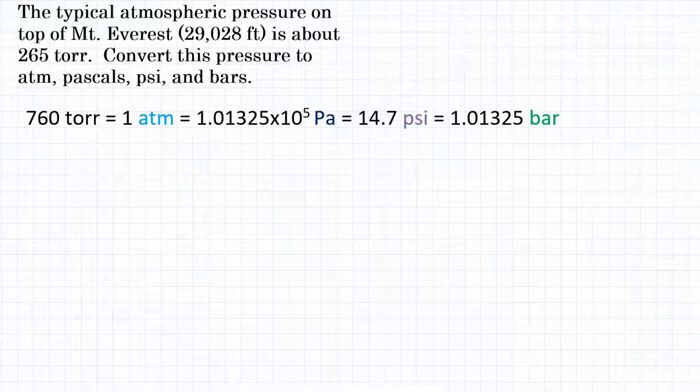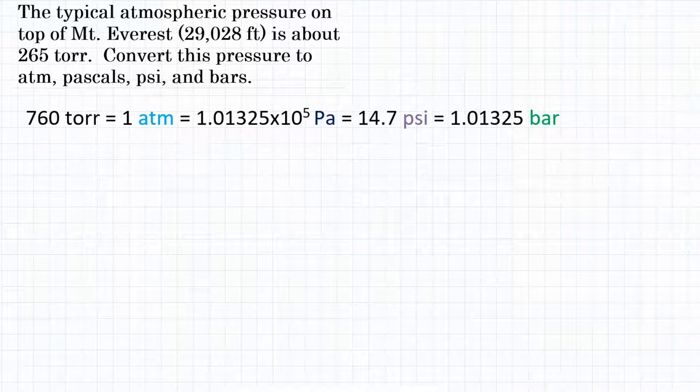Alright everyone, the problem says the typical atmospheric pressure on top of Mount Everest, which is 29,028 feet elevation, is about 265 torr. Convert this pressure to atmospheres, pascals, pounds per square inch, and bars.